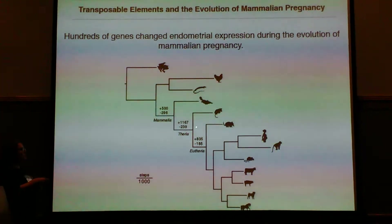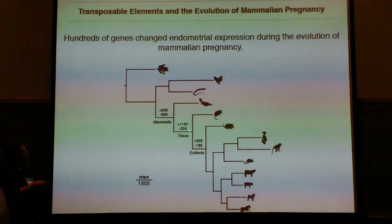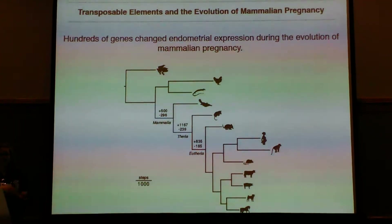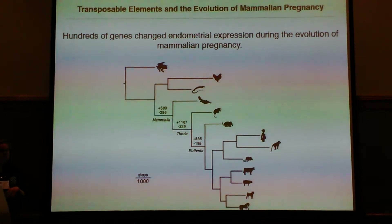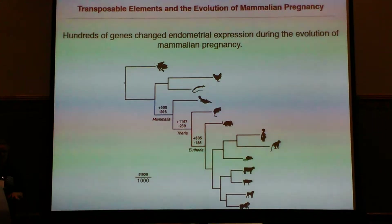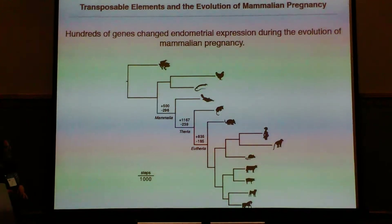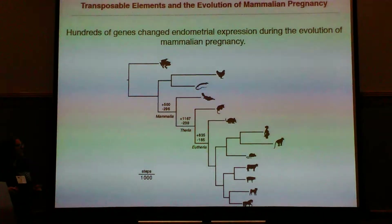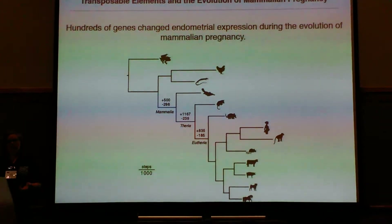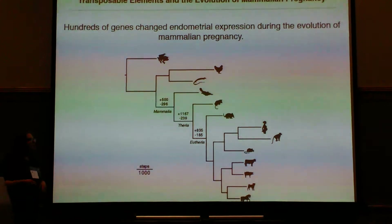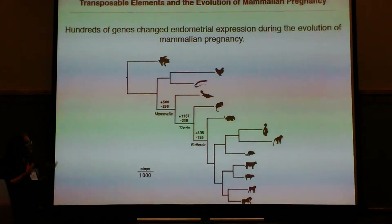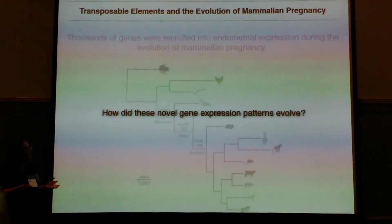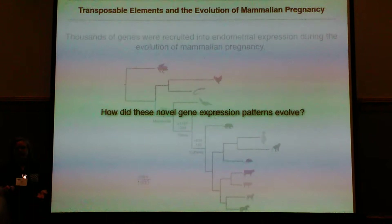For example, from the ancestor of therians to the ancestor of eutherians — so marsupials and placental mammals to just placental mammals — which is about 55 million years, 835 genes gained expression and 185 genes lost expression. From this, I was curious: how do these novel gene expression patterns evolve?